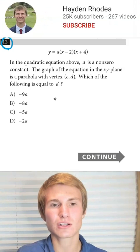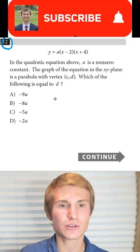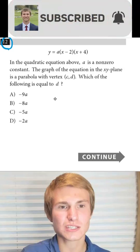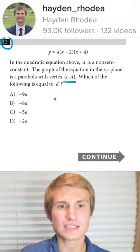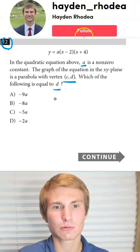If you take a look at question 12, it says in the quadratic equation above, a is a nonzero constant. The graph of the equation in the xy plane is a parabola with vertex (c, d). Which of the following is equal to d?